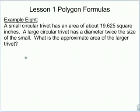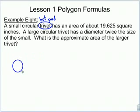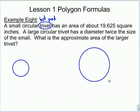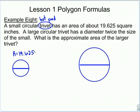Example 8. A small circular trivet has an area of about 19.625 square inches. A large circular trivet has a diameter twice the size of the small one. What's the approximate area of the larger trivet? A trivet is a hot pad — something you set a hot dish on when you take it out of the oven. We have a small trivet and a large trivet whose diameter is twice as big. The small trivet has an area of 19.625 square inches — use that to figure out the area of the large trivet.